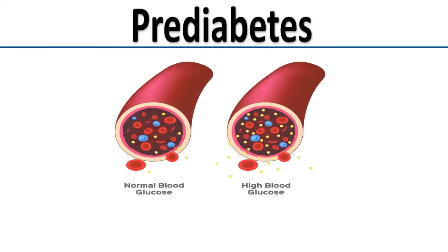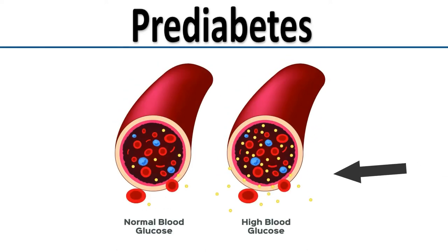Prediabetes is when blood sugar levels are higher than normal. Many people with prediabetes will have type 2 diabetes within 10 years. More than 1 in 3 US adults have prediabetes, and most of them don't know the risks they face. Prediabetes often happens before type 2 diabetes, and it also raises the risk for heart disease and stroke.